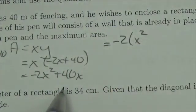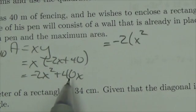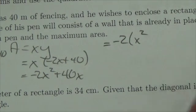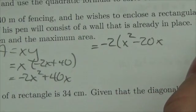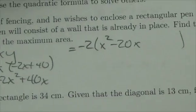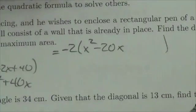So negative 2 times x squared. Now remember I have to divide the negative 2 out of the first two terms here, the quadratic term and the linear term, which means it's got to come out of the 40. So 40 divided by negative 2 will be negative 20x. And now what I got to do is I got to complete the square.